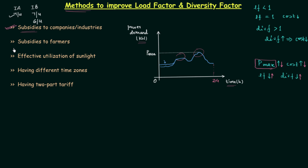We can do the same thing with farmers — we can provide them subsidies to run their agricultural equipment. They run pump sets to irrigate their fields and they can do this during the night time. The third method is the effective utilization of sunlight. We can use sunlight and also store it; in that way the demand will reduce and the load factor and diversity factor will increase, making the cost of electrical energy cheaper.